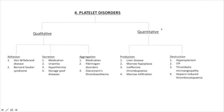Thrombocytopenia due to increased destruction includes hypersplenism, immune thrombocytopenic purpura, and thrombotic microangiopathy. There are nine causes of thrombotic microangiopathy: malignant hypertension, hemolytic uremic syndrome, valve hemolysis, cavernous hemangiomas, preeclampsia, TTP, scleroderma, disseminated carcinomatosis, and disseminated intravascular coagulation. And of course, the infamous heparin-induced thrombocytopenia, which has two types — type one and type two.